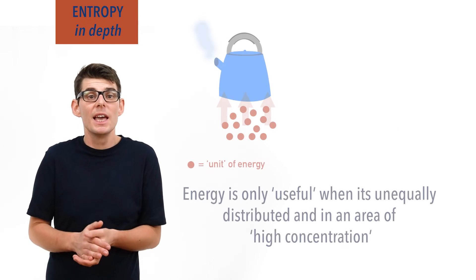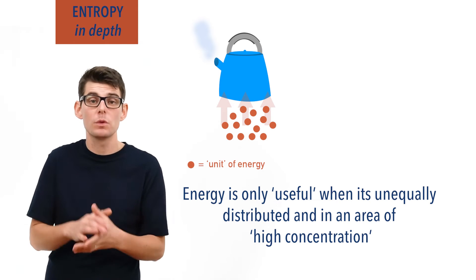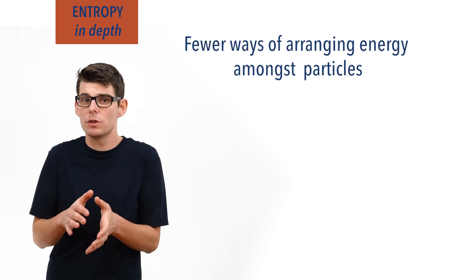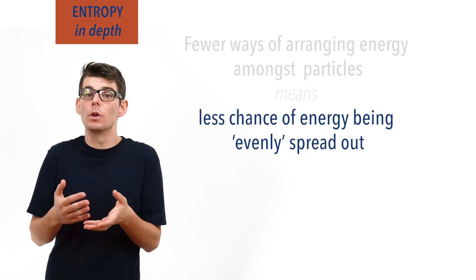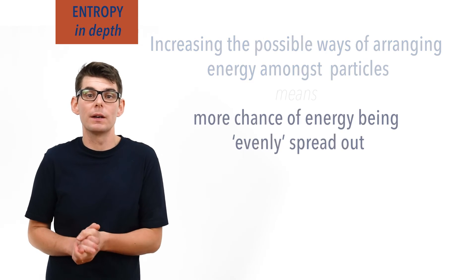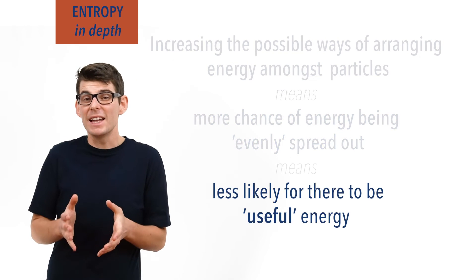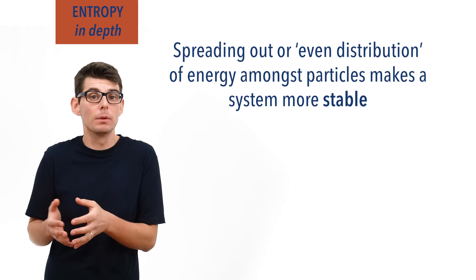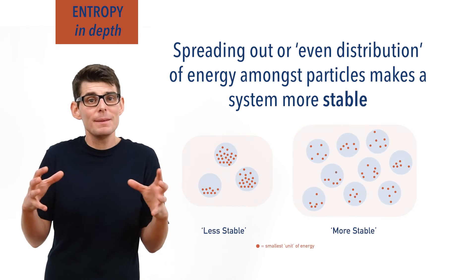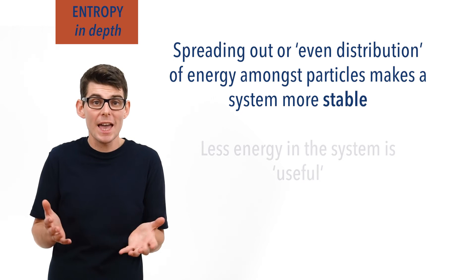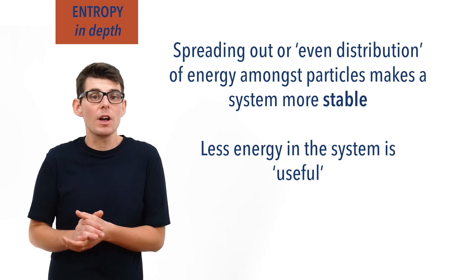The more the energy spreads out, the less useful it becomes. Energy is only really useful when it's in one place in high amounts. The energy you use to boil water for a cup of tea is only useful when it's concentrated on heating that small amount of water — spread out into your entire room, it doesn't do anything useful at all. This means if there are fewer possible ways of arranging the energy, it will be less spread out and more likely that there will be useful energy available. If the number of possible ways of arranging the energy increases, more of it will be evenly spread out and less will be available as useful energy. We describe this useless energy as entropy.